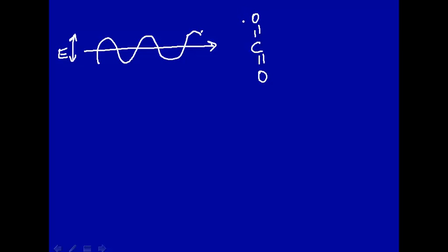Let's look at a couple of normal modes. Suppose this oxygen goes out that way, this oxygen goes out that way, and the carbon remains the same. Initially, carbon dioxide does not have a dipole moment. If this oxygen goes that way and the other oxygen goes the opposite way, then carbon dioxide still does not have a dipole moment. So this particular normal mode does not produce a fluctuating dipole moment, and therefore it can't interact with a fluctuating electric field.